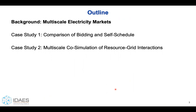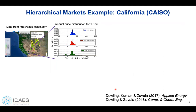First I'll give some background, then I'll compare bidding and self-scheduling paradigms, and then I'll talk about co-simulation to understand these resource-grid interactions. So energy markets are hierarchical.